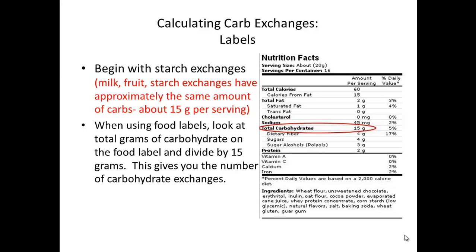If we want to calculate carb exchanges using food labels, we simply look at the total grams of carb on the food label and check that the estimate is 12 to 15 grams. Milk, fruit, and starch exchanges all have approximately the same amount of carbs per serving — about 12 to 15 grams. When using a food label, look at total grams and divide by 15 to get the number of carb exchanges. For example, if a food item has 15 grams of carb, dividing by 15 gives you one exchange. This will be very important to remember when completing assignments related to estimating insulin levels for diabetics.